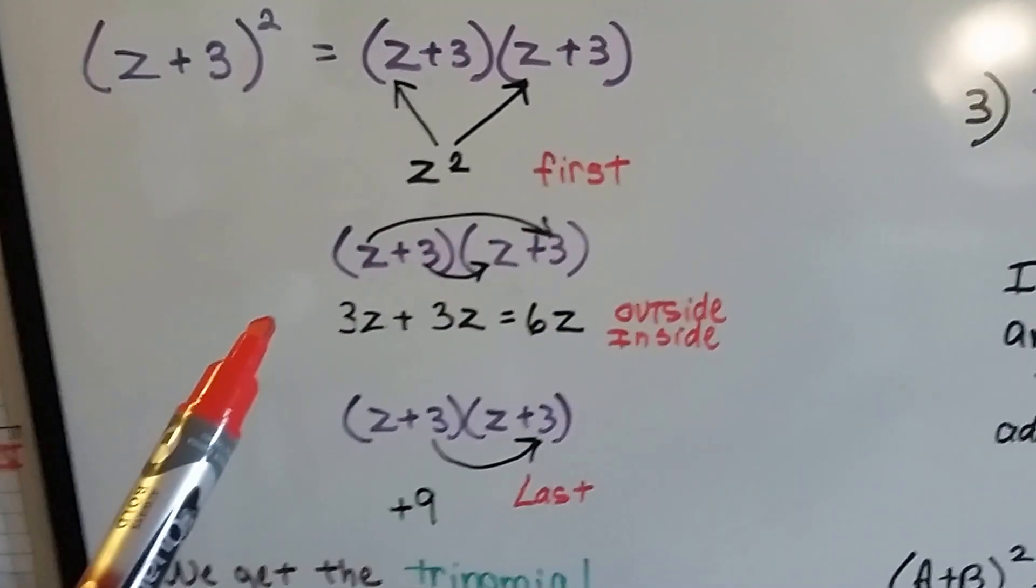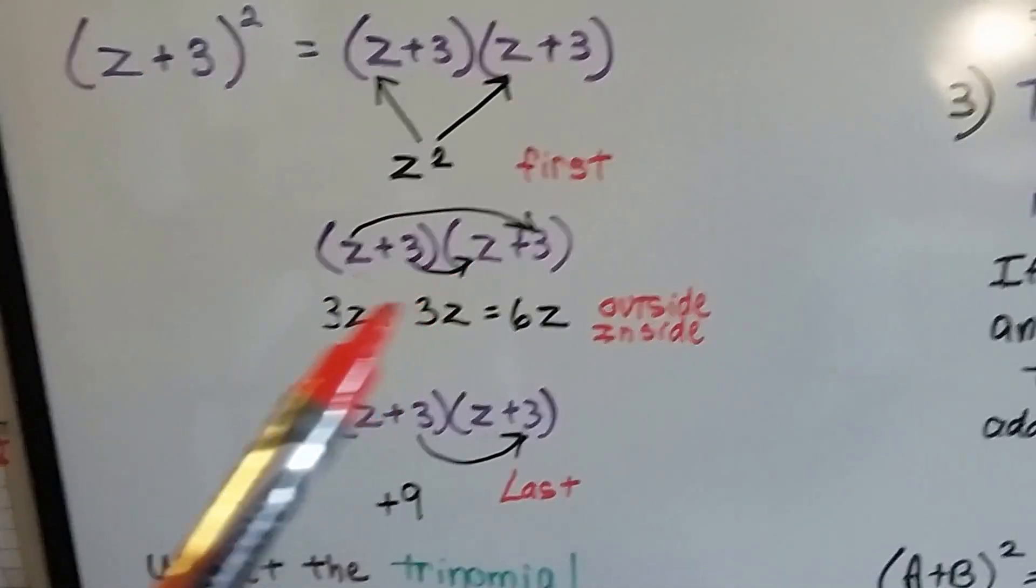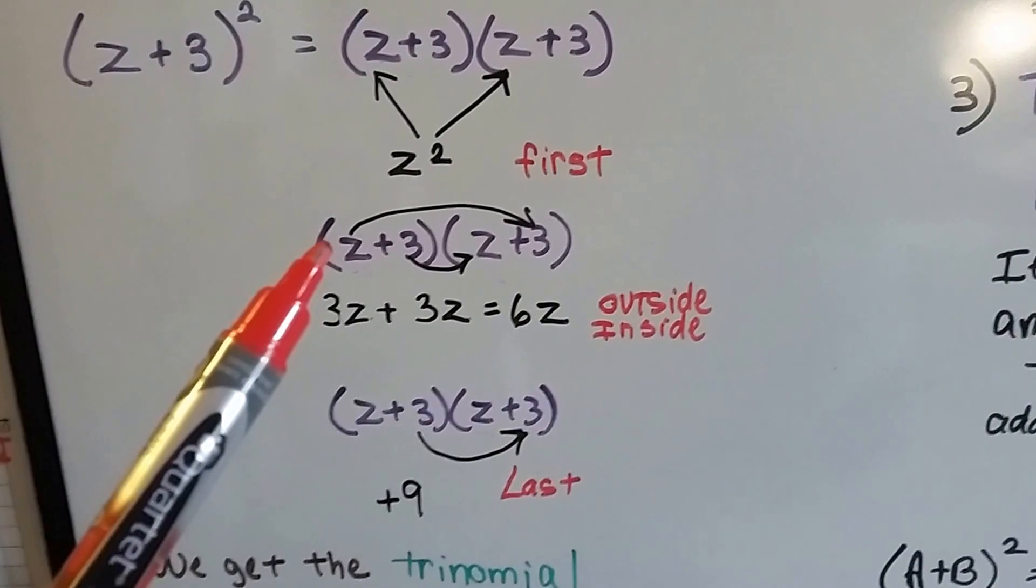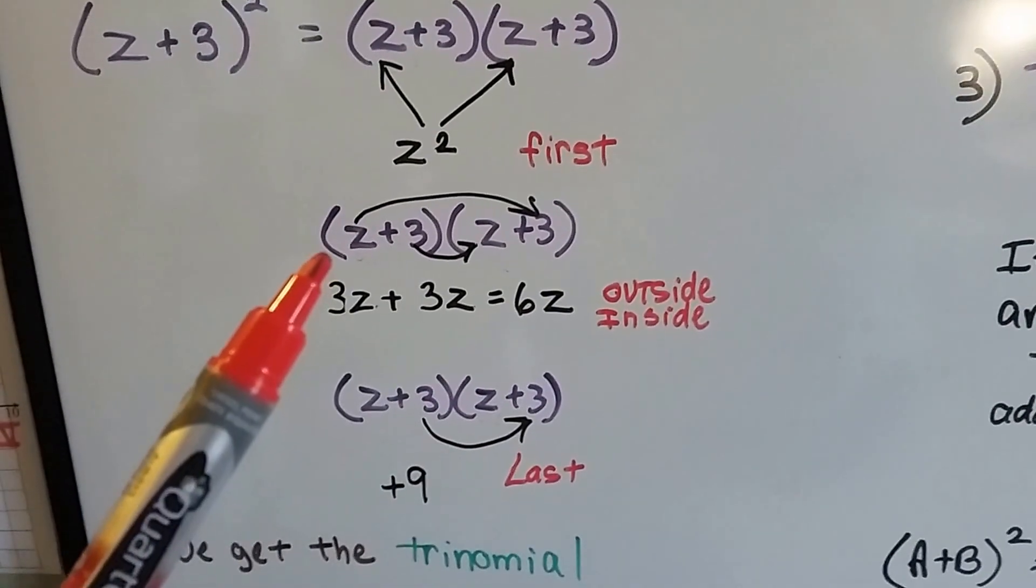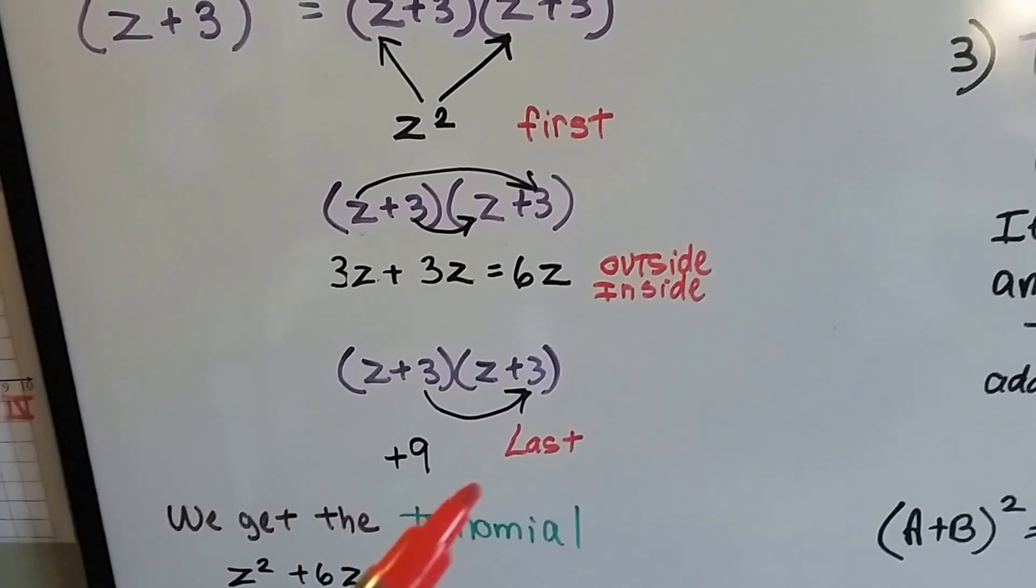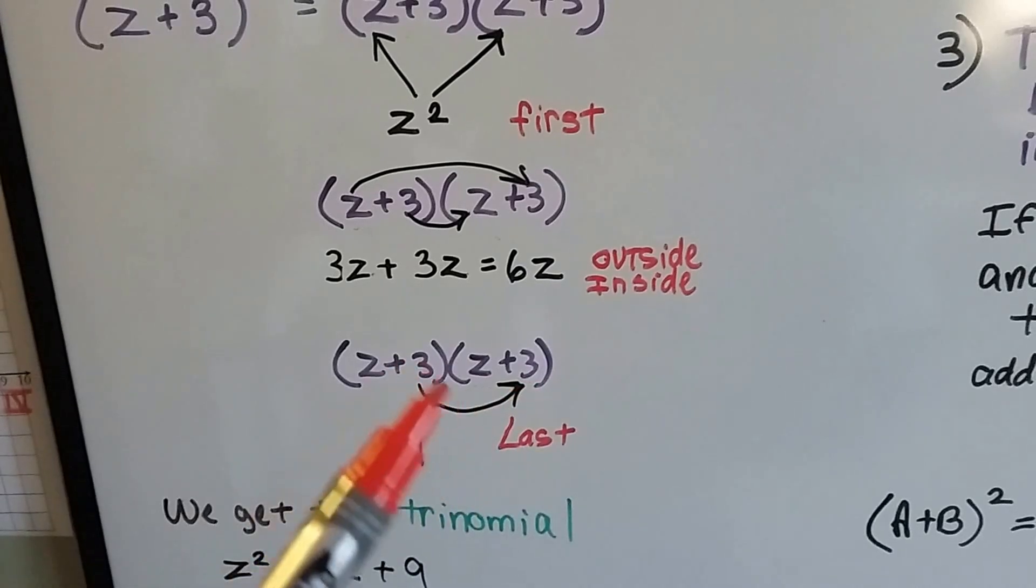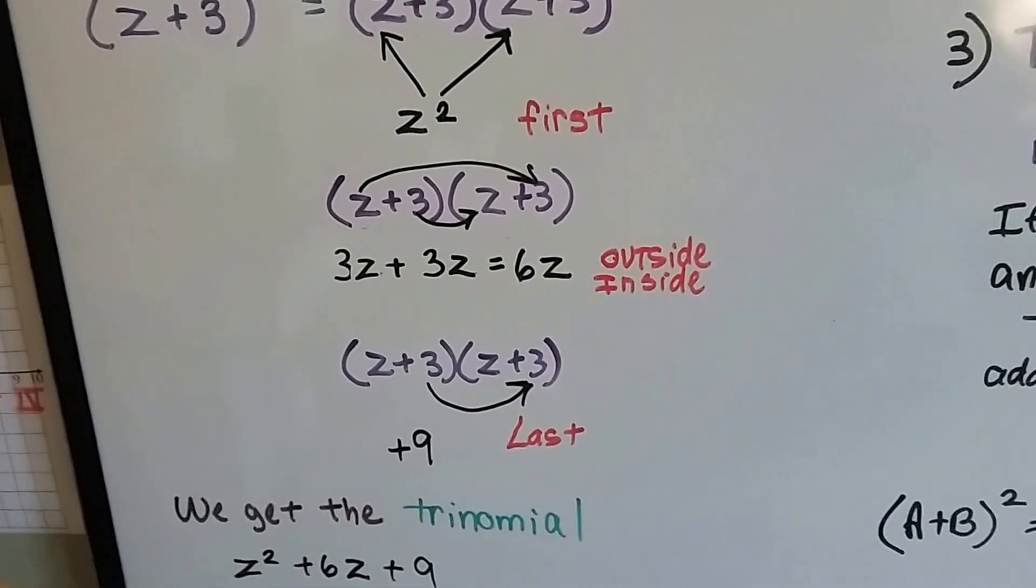The outside and the inside is z times 3 and 3 times z. We write the coefficient first, so it's 3z plus 3z. That's 6z. Now we do the L in FOIL, the last. We do 3 times 3, the two last terms in the parentheses, and we get a positive 9.